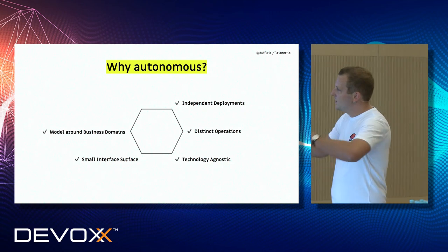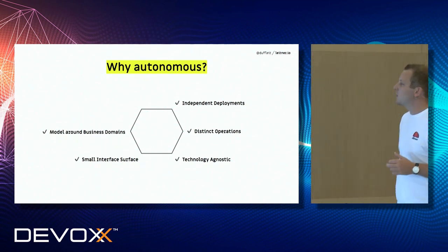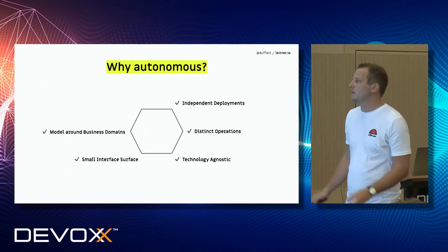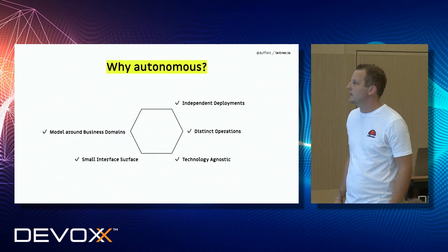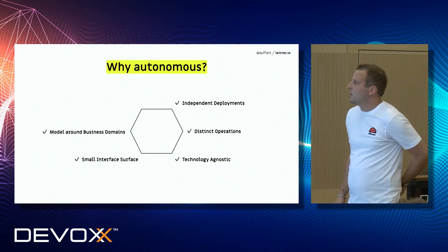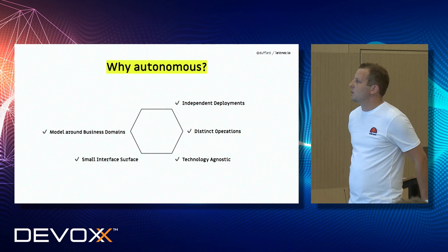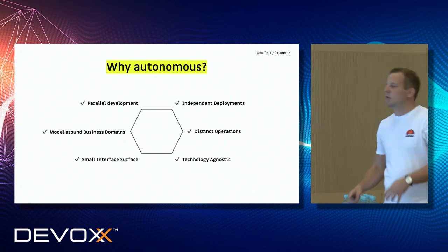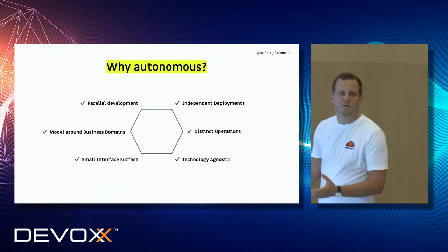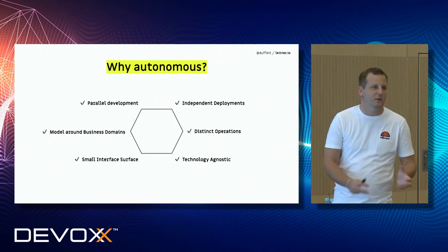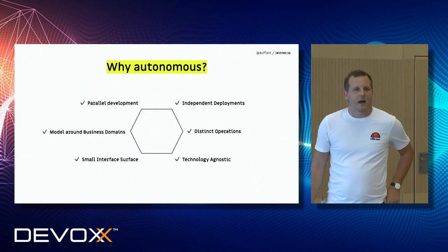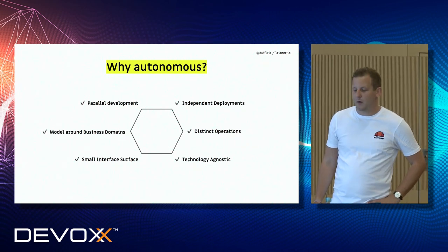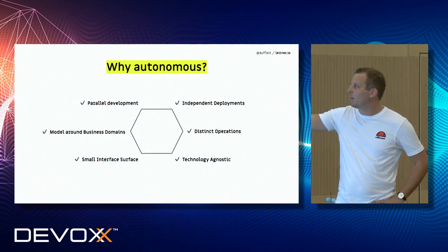We can also model around business domains — this is a huge topic, the whole DDD blue book stuff. The idea is to bring teams around services, and it's really good because you can get cross-functional teams without bottlenecks. Last but not least, we support parallel development. That's why we usually do it — software eats the world, so we need to parallelize, and microservices are a useful way for companies to support parallel development.